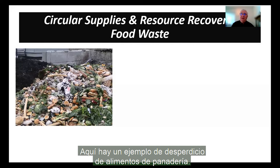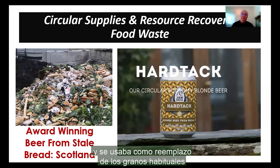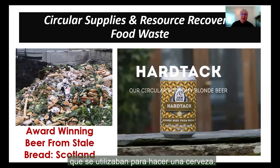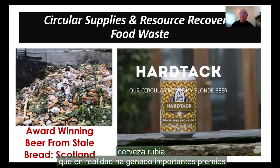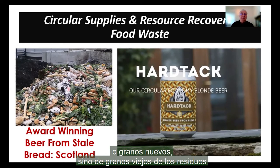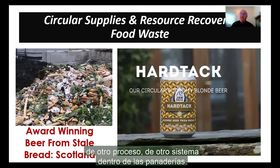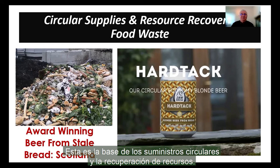Here's an example of food waste from bakeries. In Scotland, stale bread was taken from local bakeries and used as a replacement for the usual grains that went into making a beer. So now there is a new circular economy blonde beer, which has won major awards for its taste — coming not from new wheat or new grains, but from old grains, from the waste from another process, from within bakeries. So where else can we find these potential wastes that are actually valuable raw materials that can be used again? This is the basis of circular supplies and resource recovery.